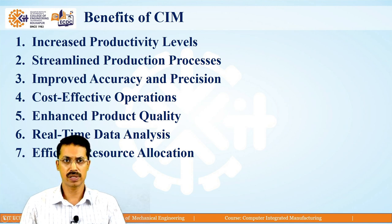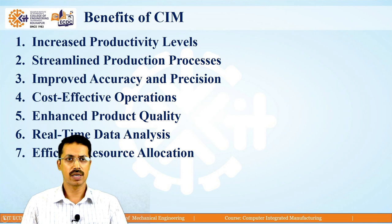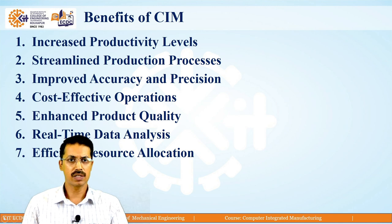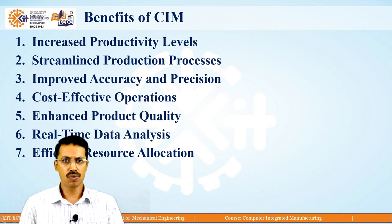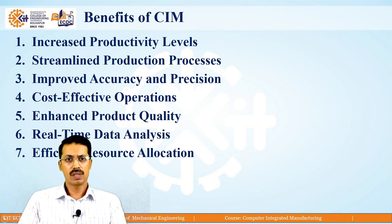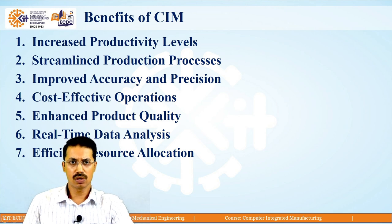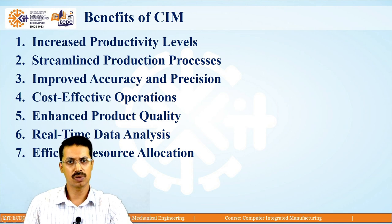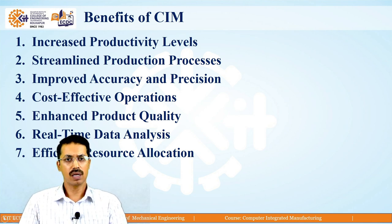The second benefit is streamlined production process — whatever process is going on within the factory is streamlined. Next is improved accuracy and precision, so whatever manufacturing we are doing is highly accurate and precise, with minimum wastage after implementation of CIM. Next is cost-effective operations — all the operations going on within the industry are also cost effective.